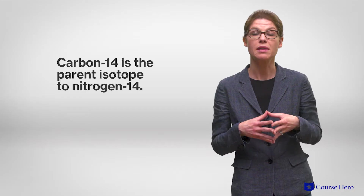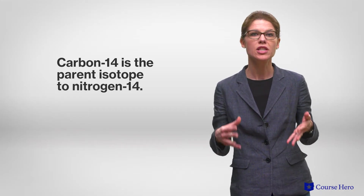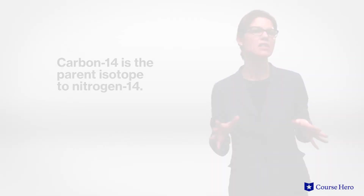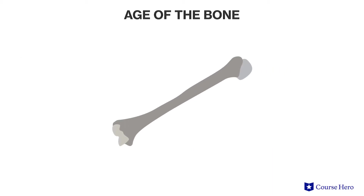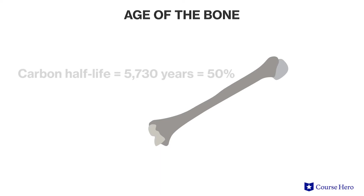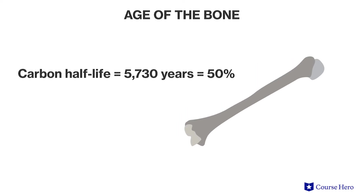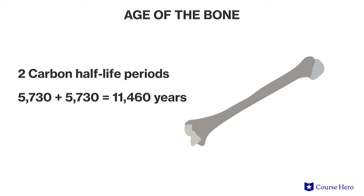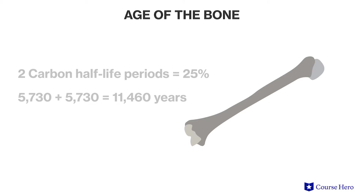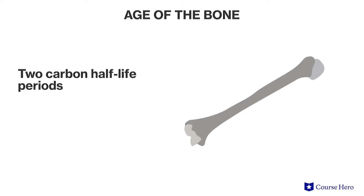Carbon-14 is known as the parent isotope, and nitrogen-14 is known as the daughter isotope. For example, say the amount of carbon-14 found in a bone specimen is 25 percent, and the amount of nitrogen-14 is 75 percent. We know that starting out, the bone would have contained 100 percent of the parent isotope. After the half-life of 5,730 years, this would have been halved to 50 percent. And after two half-life periods, the amount of carbon-14 would be 25 percent. So the age of the bone is two half-life periods, or 11,460 years old.